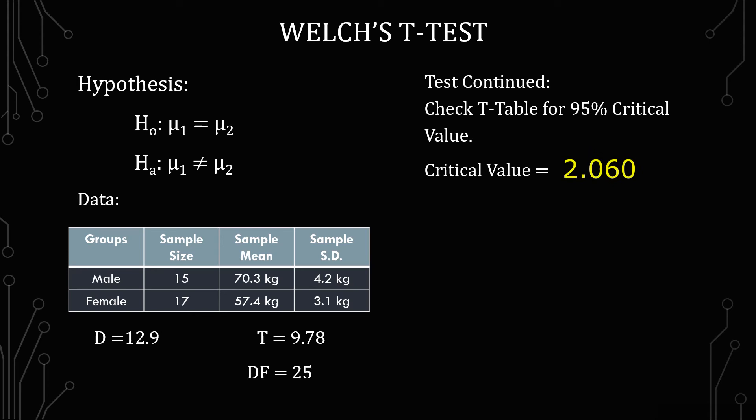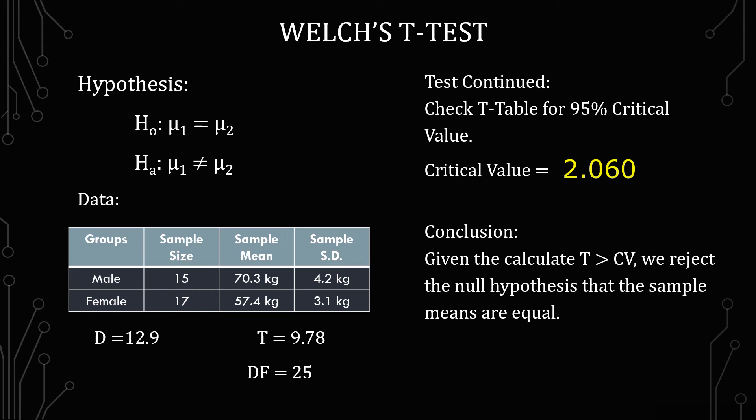Which means that given the calculated t of 9.78 being greater than 2.060 as the critical value, we reject the null hypothesis that the sample means are equal.